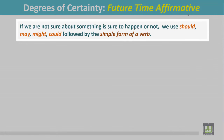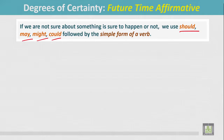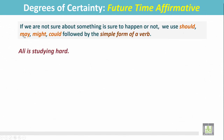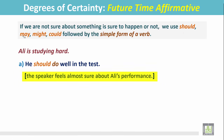If we are not sure about something happening, we use 'should,' 'may,' 'might,' or 'could,' followed by the simple form of a verb. Example: Ali is studying hard — he should do well in the test. In this case, the speaker feels almost sure about Ali's performance, and the degree of certainty is less than 100 percent.